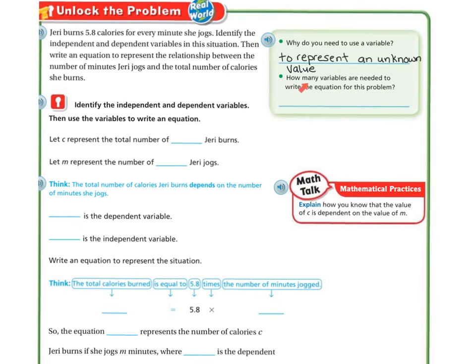Now, how many variables are needed to write the equation for this problem? We're going to need to know the total number of calories and the total number of minutes. So we are going to need two variables.